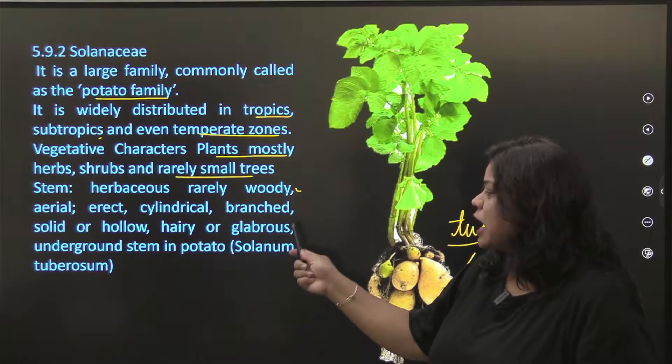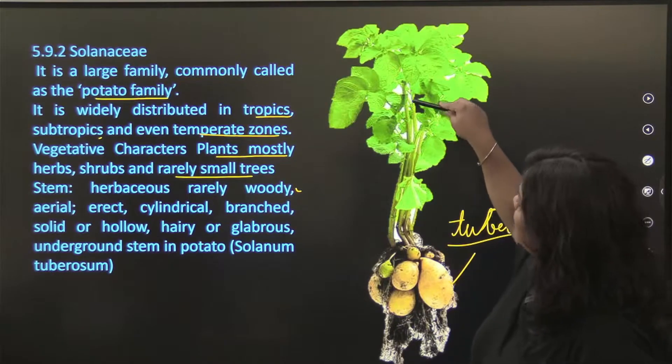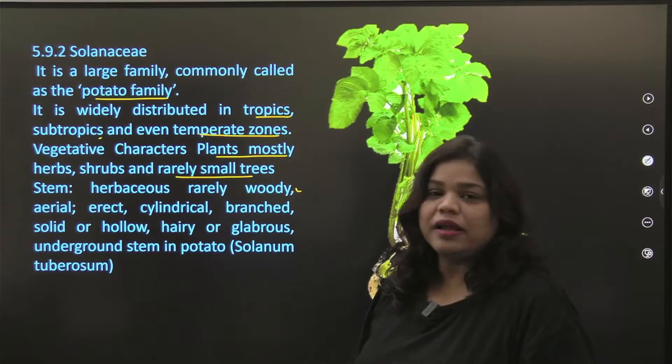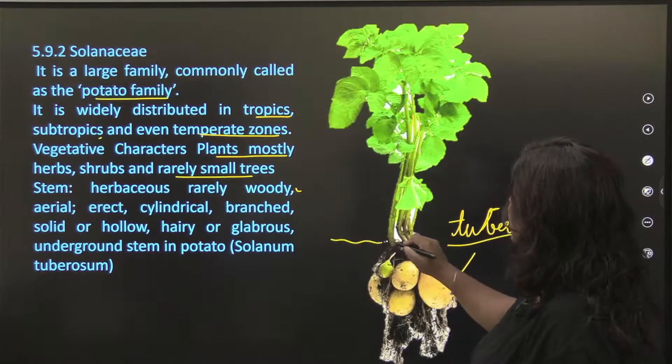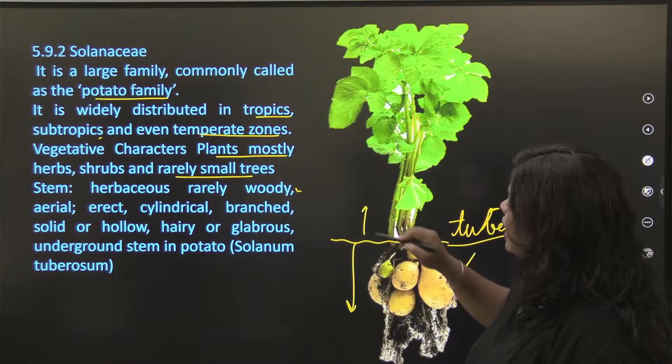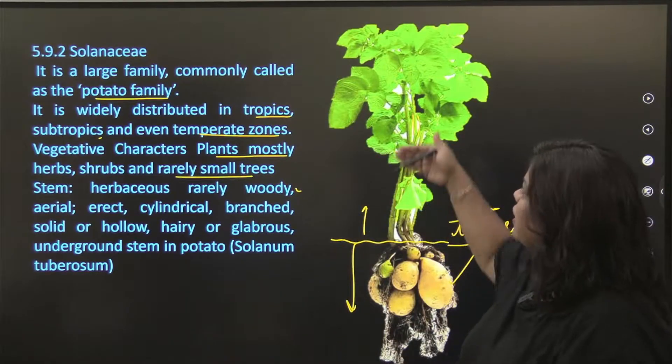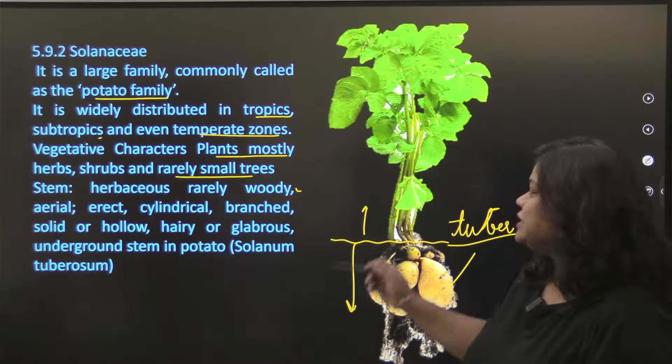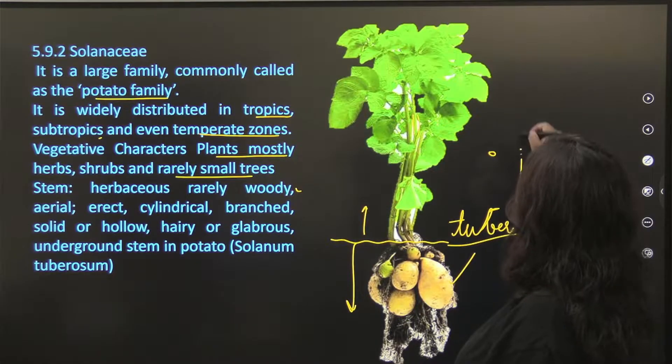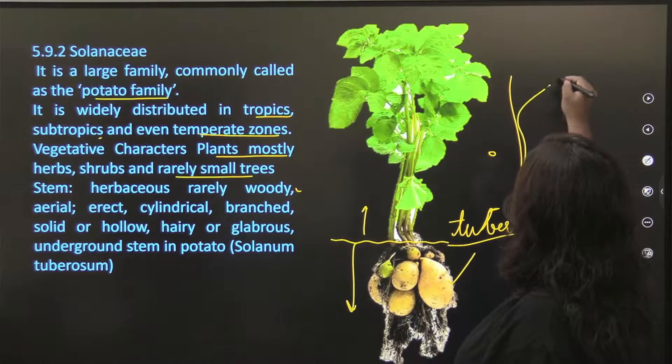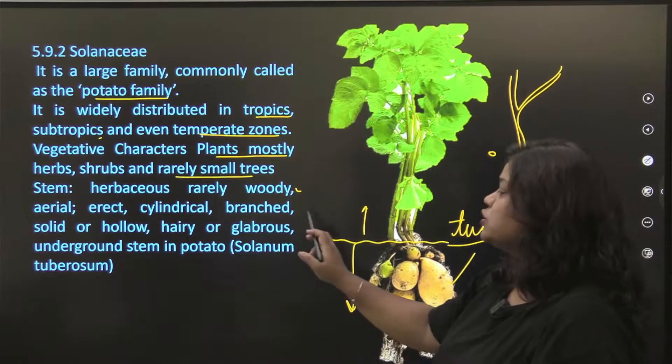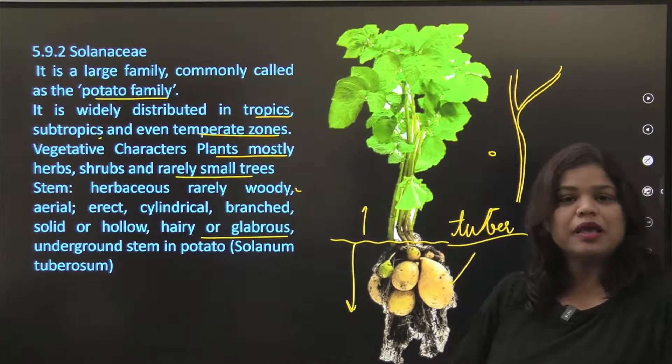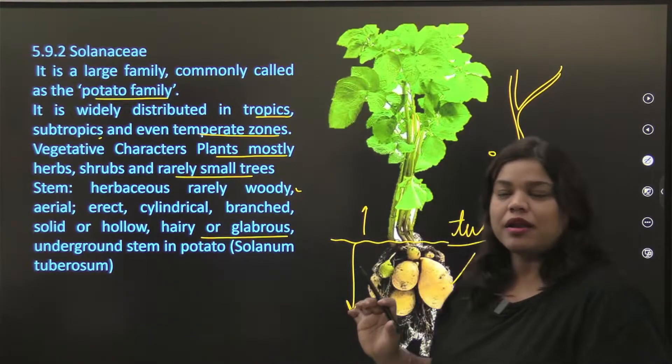We all know when we are doing modification of stem, we know that our aloo is stem, it's not root. Tuber, if you remember, I told you. So tuber. Now what happens is your stem description. Stem is shown here clearly. What are you saying? Rarely woody. Yes, it is herbaceous most of the time. Second, aerial. Obviously, your soil. This is your soil. So this is the aerial part, it is in your air. Erect, cylindrical. If we make potato stem, it will be this way. And if it is branched, it will be this way. Solid and hollow, hairy and glabrous. Underground stem, here you will mark your underground stem specifically in your aloo.